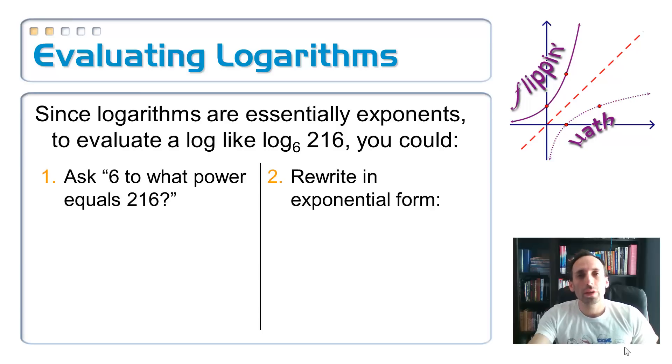Here is a way that we can evaluate a logarithm. If I wanted to find the log base 6 of 216, what I'm asking myself—so here's the first method over here on the left—just ask yourself: 6 to what power equals 216? Well, 6 to the third power is equal to 216, so that means that the log base 6 of 216 has got to be equal to 3.